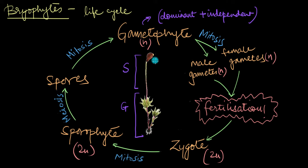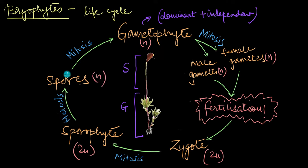Once the sporophyte matures, it is going to produce spores via meiosis, meaning the chromosome numbers get halved and these spores end up being haploid. These haploid spores are then released into the environment and will give rise to new gametophytes via mitosis when conditions are ideal. And this is how the entire cycle continues.